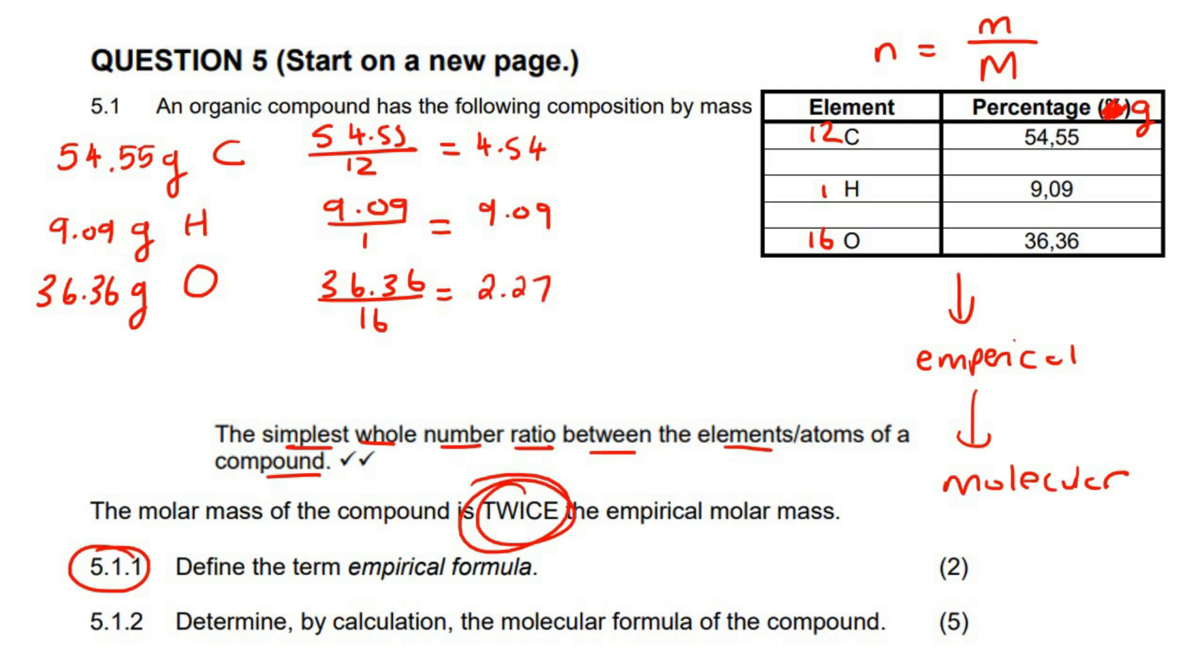What we then do is we take the smallest number, which is going to be the 2.27, and so you're going to divide all of them by that number. So you're going to say 4.54 divided by 2.27, which is 2.